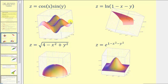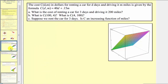Let's look at some applications of functions of two variables. Here we're given the cost c of d comma m, in dollars, for renting a car for d days and driving m miles, given by the formula c of d comma m equals 40d plus 0.15m. So d is the number of days and m is the number of miles.